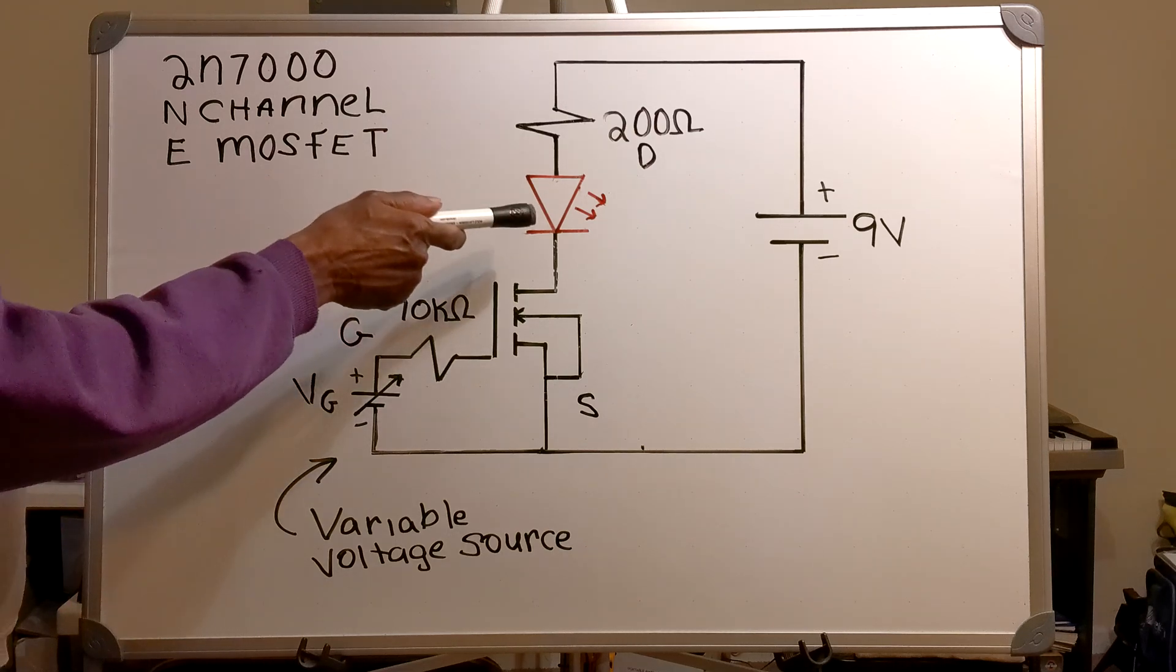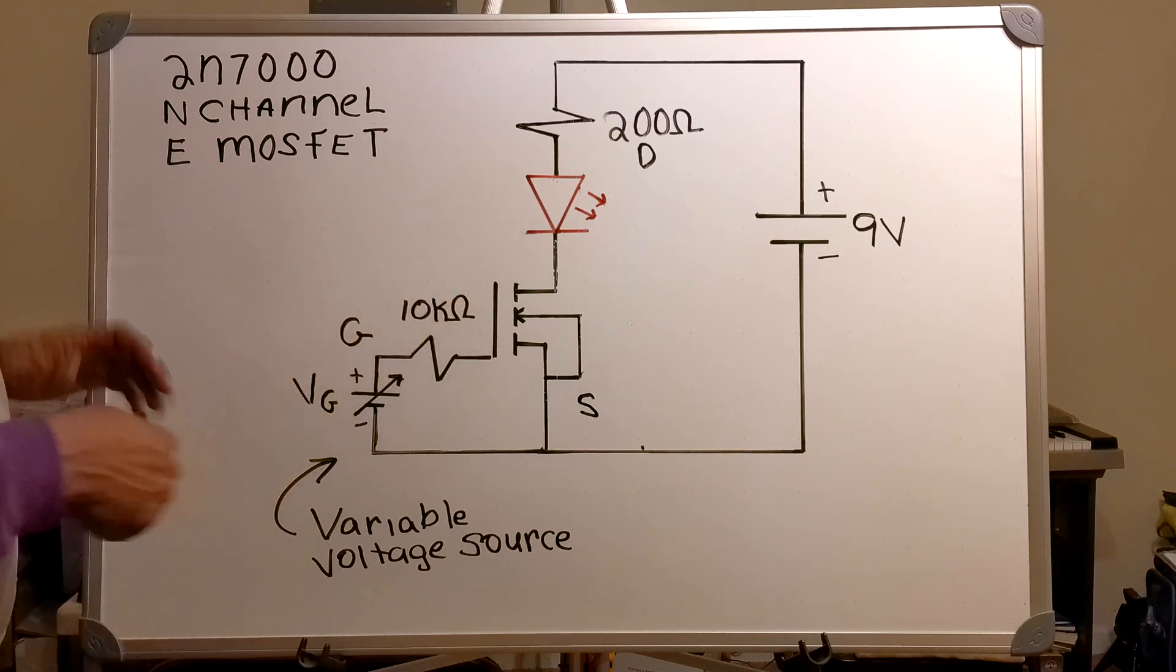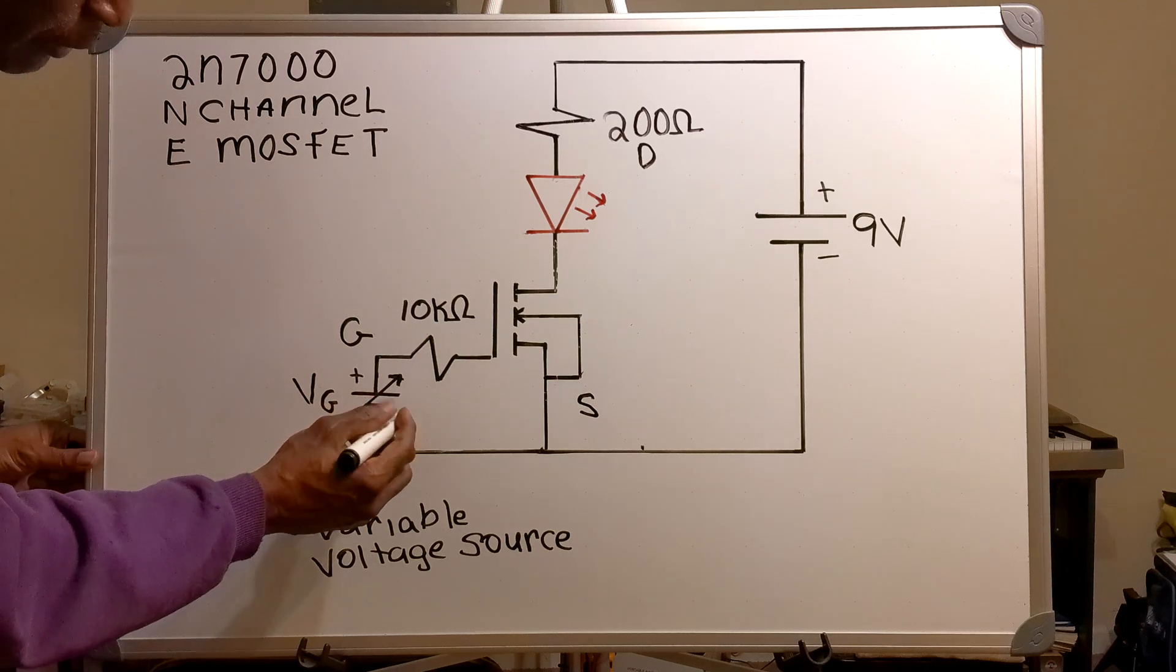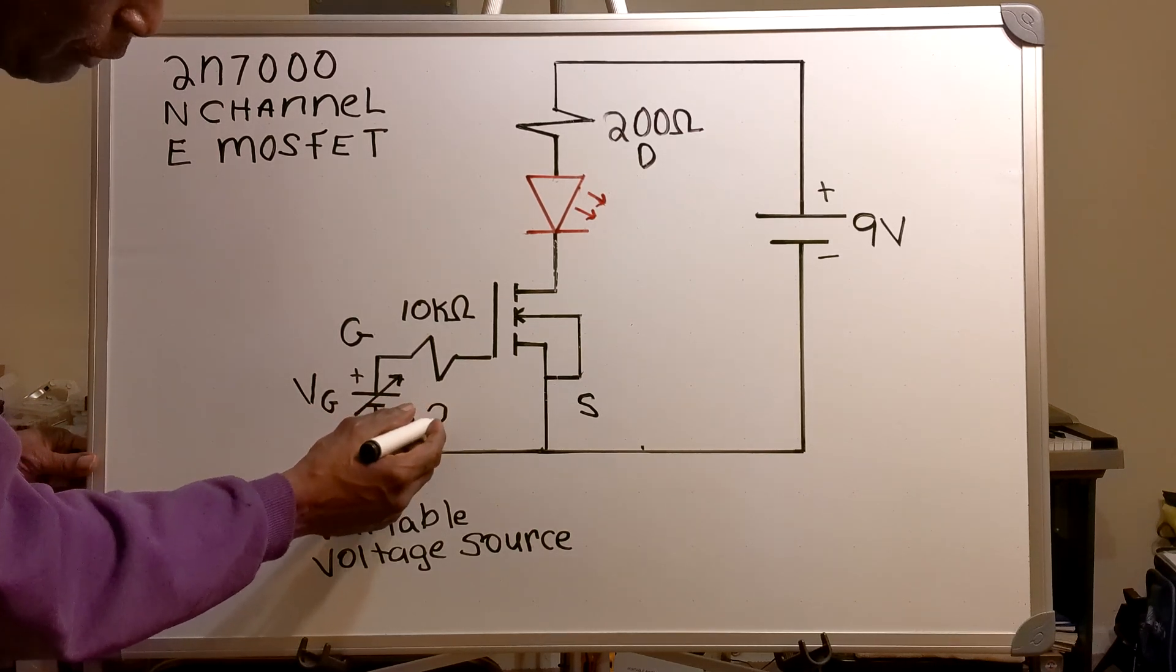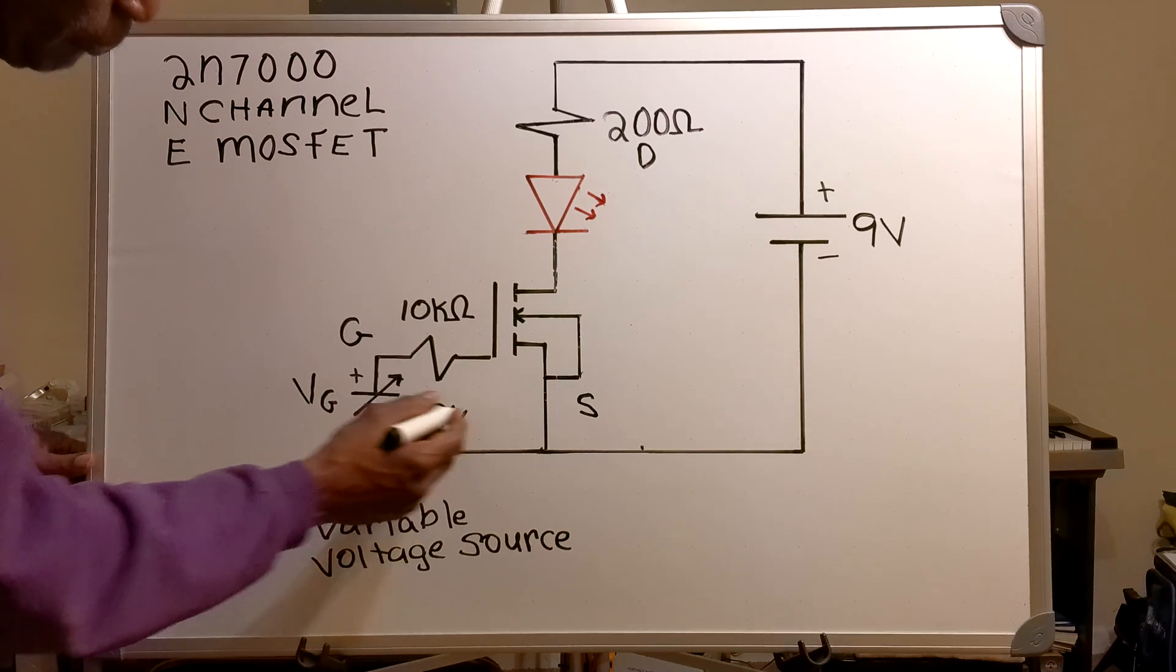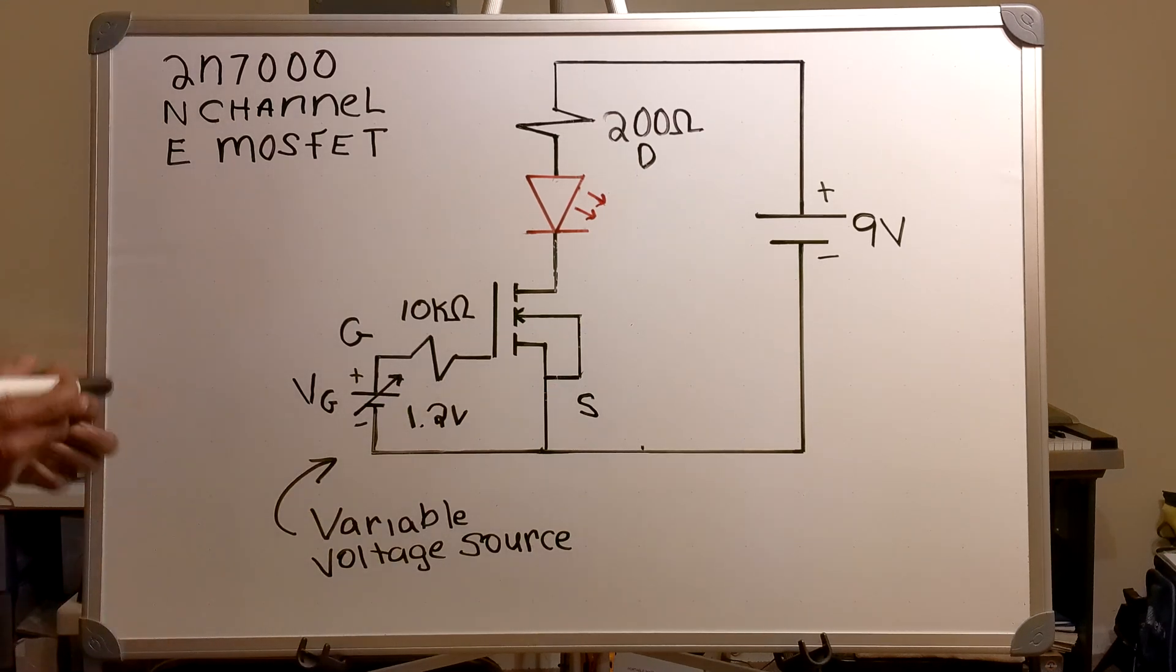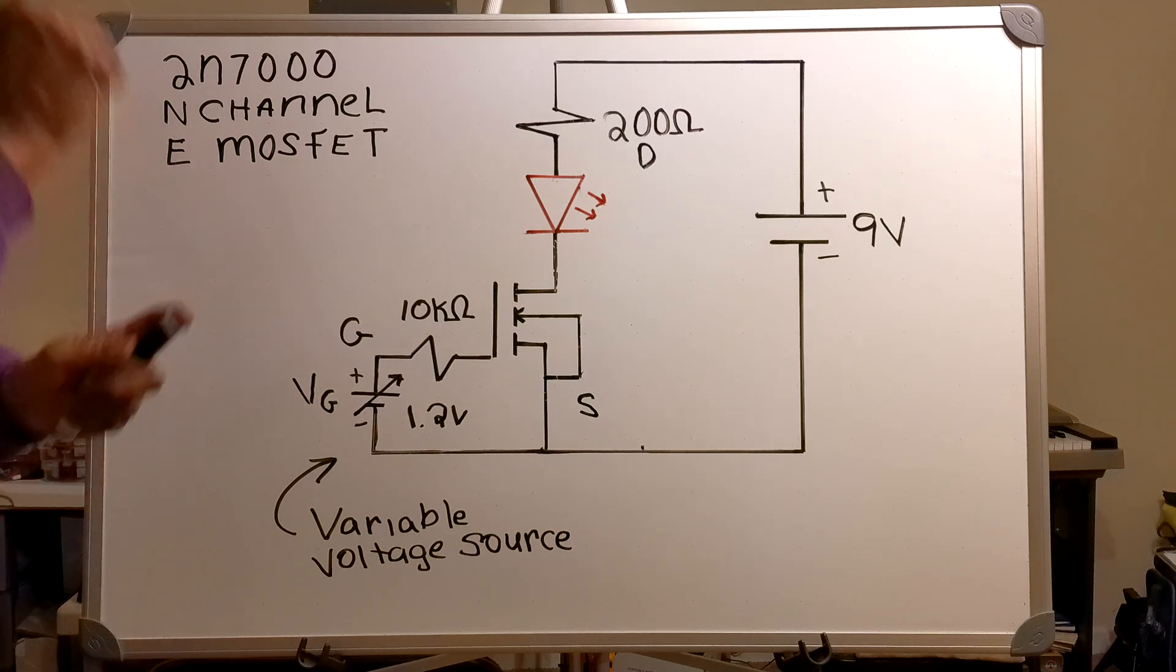In order to get the LED to turn on, approximately 1.2 volts would have to be applied to the gate. That just gets the LED to turn on just a little bit.